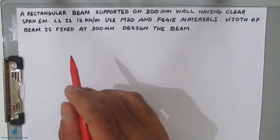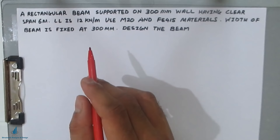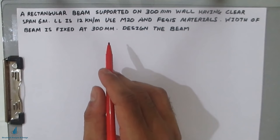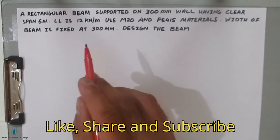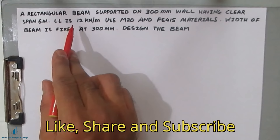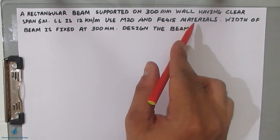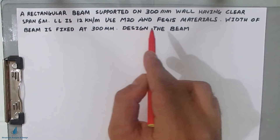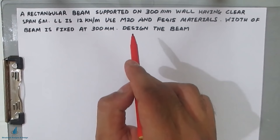Hello friends, welcome back to All About Structural Analysis and Design. In our previous videos we have seen the analysis of singly reinforced beams — three types of analysis. In today's video we shall design the singly reinforced beam completely with codal stipulations. The given data is a rectangular beam supported on a 300 mm wall, clear span six meters, live load 12 kN/m, using M20 and Fe415 materials, and width of the beam fixed at 300 mm.